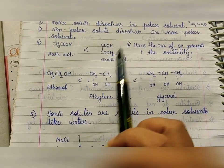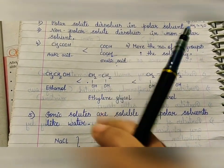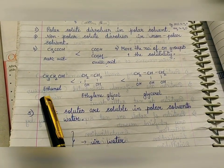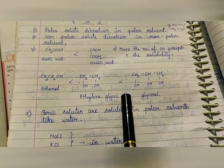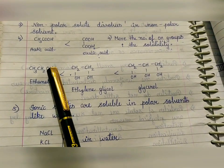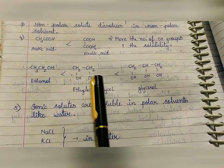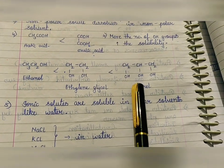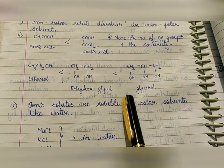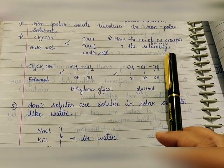Comparing acetic acid and oxalic acid — the answer is oxalic acid has higher solubility. Next, compare ethanol, ethylene glycol, and glycerol. Ethanol has one OH group, ethylene glycol has two OH groups, and glycerol has three OH groups. So who will have higher solubility? Glycerol — higher the number of OH groups, higher the solubility.